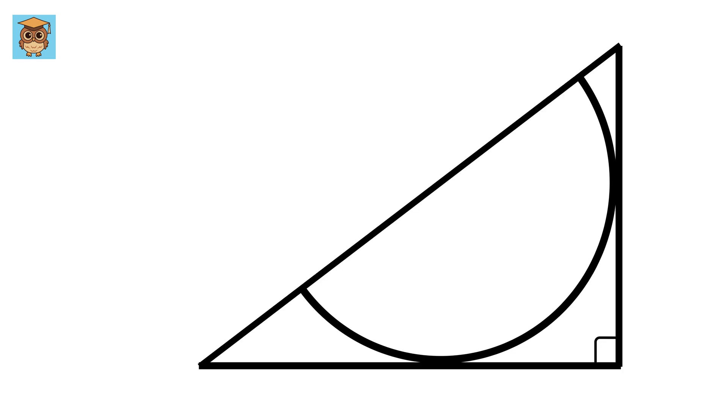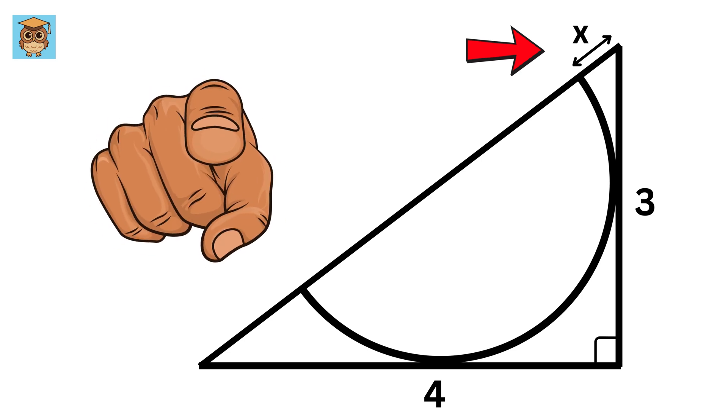In this video, we have been given a semicircle which is inscribed in this right-angled triangle whose side lengths are 3 and 4. Our job is to find the value of this X. Can you solve it?